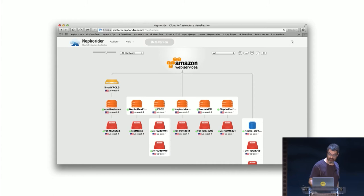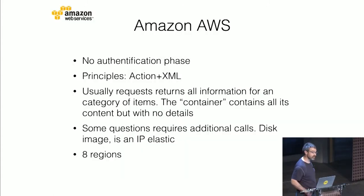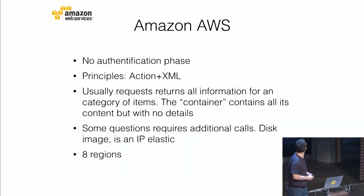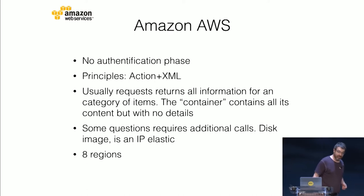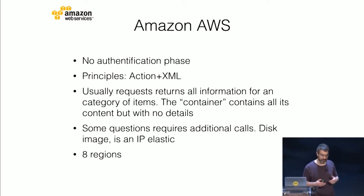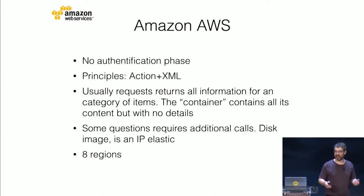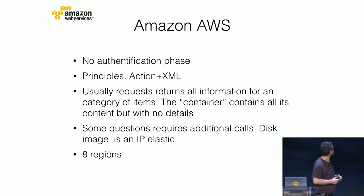It's a sample on Amazon services. So let's start with the biggest provider, which is Amazon AWS. With Amazon AWS, you have no authentication phase. You do directly your queries once you have your credentials. The principle is like you POST an action and you receive back your XML. That's nice, good stuff. When you make an action, you receive everything — just like 'describe me all instances,' you get all the information you want. You don't need to do a lot more queries to ask more.